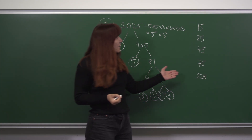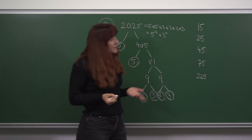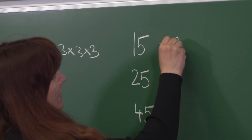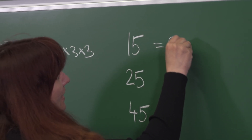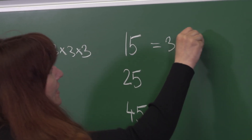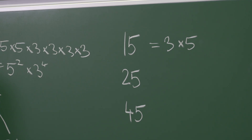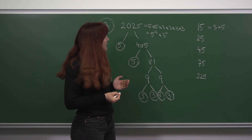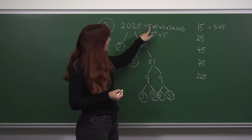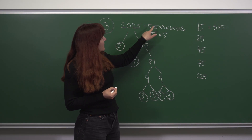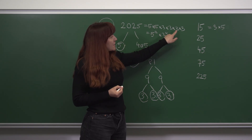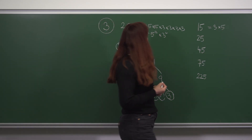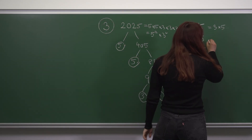Now let's look at the numbers. 15 is quite easy — it is 3 times 5. We can easily see that 15 is a factor of 2025 because 5 times 3, multiplied by 5 times 3 times 3 times 3, gives us 2025.